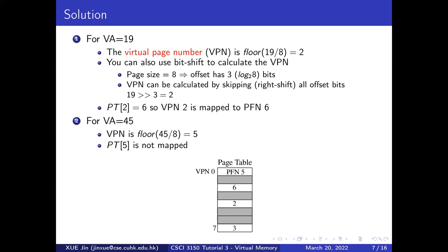A second method to calculate the virtual page number is to use bit-shift operations. Because the page size is 8 bytes, the offset part needs 3 bits (2³ = 8). With only one level of page table, the virtual address consists of the offset part and the first-level page table index. Shifting the address right by 3 bits gives the virtual page number — shifting 19 right by 3 also gives 2. Looking up entry 2 in the page table, we find it maps to physical frame number 6, so this address is mapped.